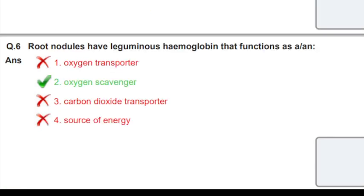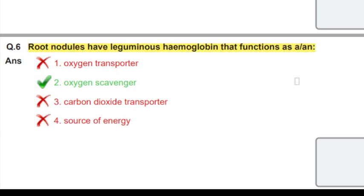This is a very important question. Root nodules have leguminous hemoglobin that functions as an oxygen scavenger in leguminous plants. Oxygen scavenger is the correct answer. This is an important question that appears in many exams.